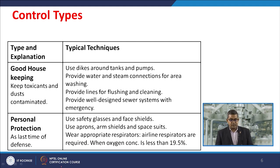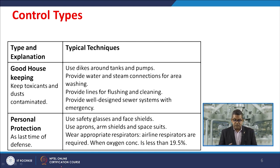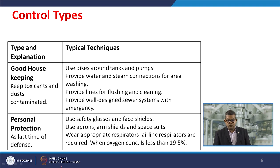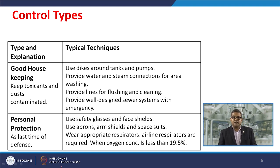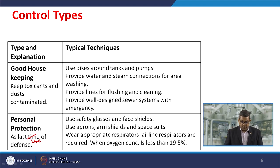Personal protective equipment includes safety glasses and face shields, aprons, arm shields and space suits, and appropriate respirators. Airline respirators are required when oxygen concentration is less than 19.5% — this concentration is called IDLH, meaning immediate danger to life when oxygen drops below this level. Personal protection is the last line of defense.